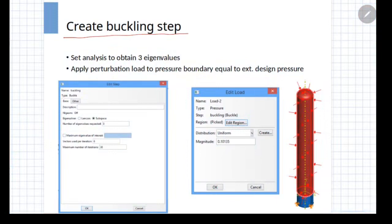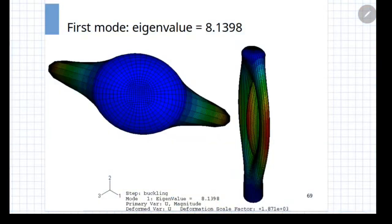The next is to create the buckling step. Please note that this particular analysis is carried out under Abacus software, so the interface screens are corresponding to that software. You have to mention how many eigenvalues which corresponds to the different buckling shapes which you are interested in. In this case, the three eigenvalues have been mentioned in the design and you have to apply what is known as perturbation load to the actual boundary condition which is applied earlier. Under this perturbation load, you will get the different buckling mode shapes and their corresponding eigenvalues.